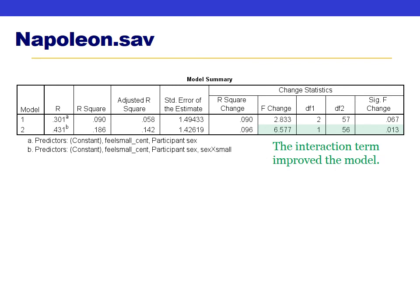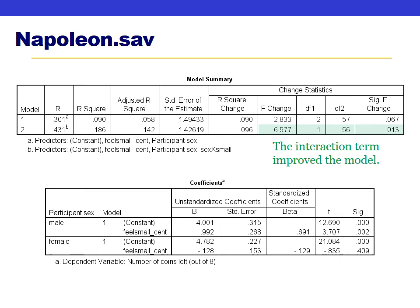We split the file by sex and run separate simple regressions for men and women with feeling small as the predictor and coins left behind as the outcome. For men, there was a significant negative relationship between feeling small and giving coins to another person — the more small a man felt, the fewer coins they left for someone else. For women, however, there was no relationship between feeling small and the number of coins left for the other person.